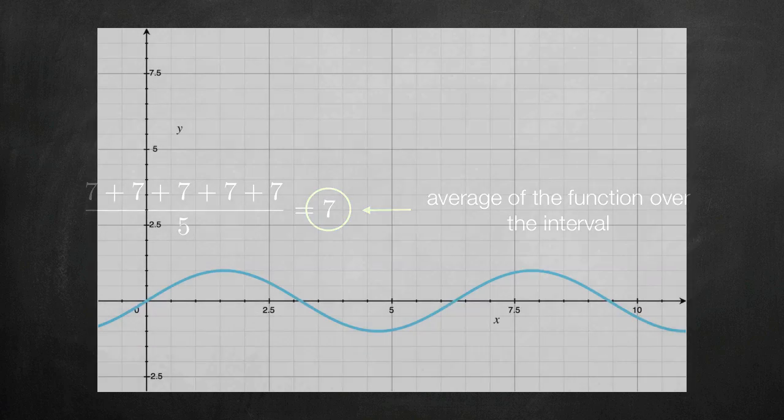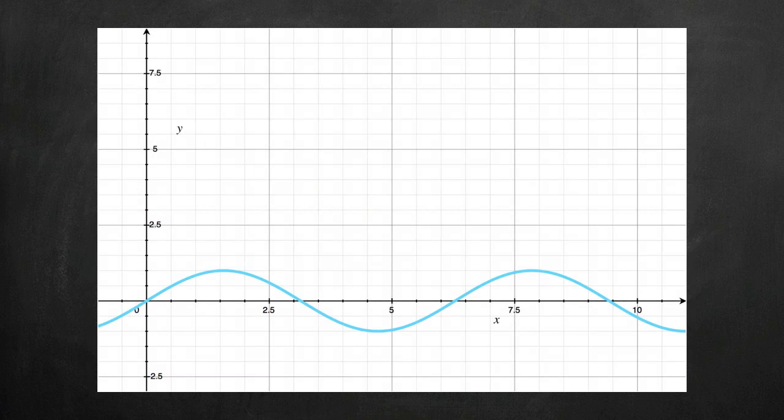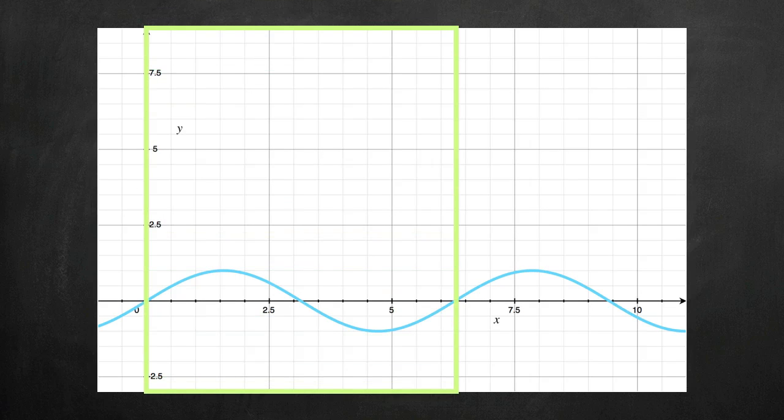But what if we have a more complicated function, like this? How do we find the average value of this function on the interval x equals 0 to x equals 4 pi? We could do the same thing and test randomly at 5 values of x to try to estimate the average, but we want to be more accurate than that.